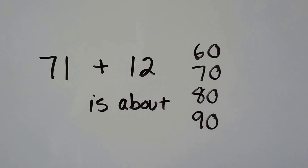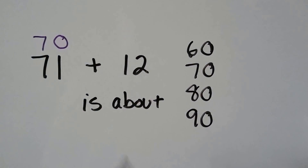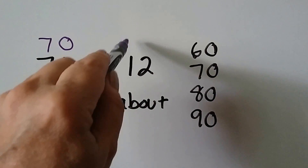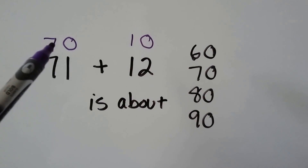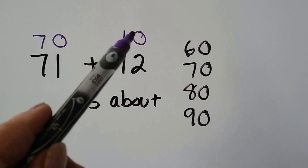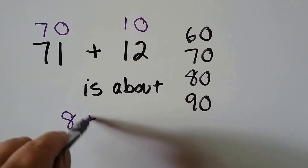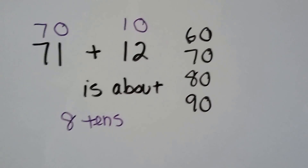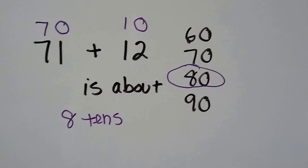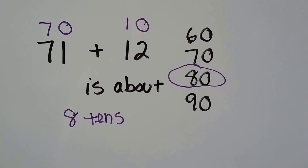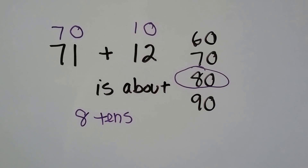Seventy-one — that's very close to seventy. And twelve is very close to ten. We add the tens place: seven plus one is eight. So it's about eight tens. So this one is about eighty. It's not exactly eighty, but it's about eighty.